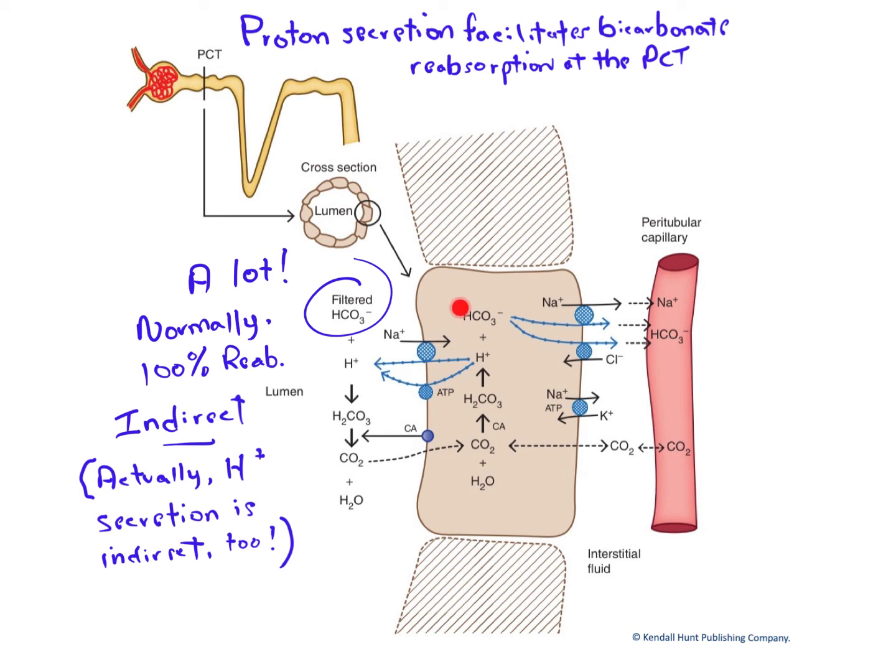What about the bicarbonate? Bicarbonate, as it builds in concentration in the cytoplasm of the PCT cell, is easily transported by two different carriers into the interstitial fluid. One is a sodium bicarbonate co-transporter, the other a bicarbonate chloride countertransporter.